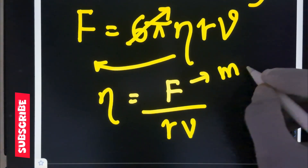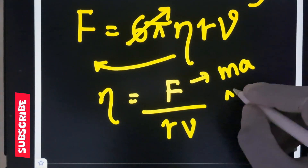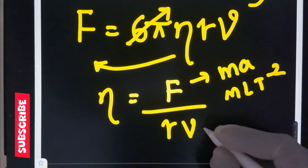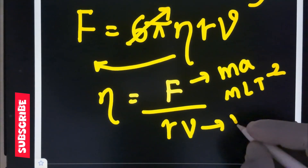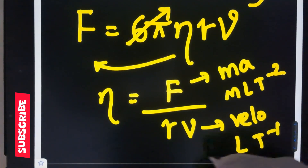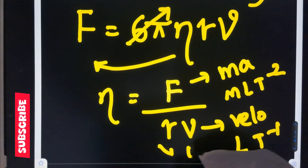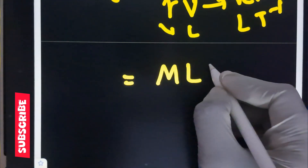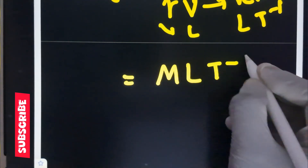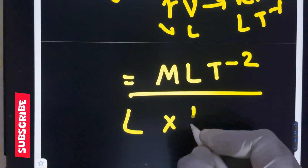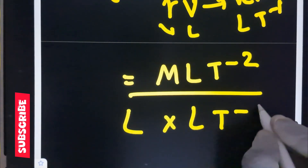Here force is equals to m times a, giving dimensions M L T power minus 2. Velocity has dimensions L T power minus 1, and radius has dimensions L. Substituting them: M L T power minus 2 divided by L into L T power minus 1.